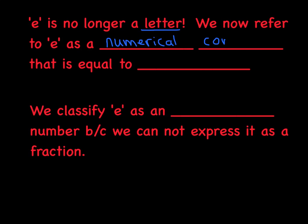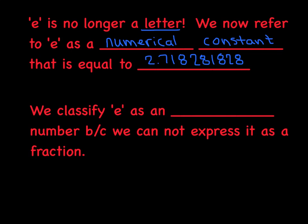What do we mean by that? We're basically saying that the value of E is constantly the same — it's going to be equal to 2.718281828, and that's nine decimal places the calculator displays. We classify E as an irrational number, which is the opposite of a rational number. It is considered real, but within the realm of being real, it is considered irrational, simply because we cannot express it as a fraction.